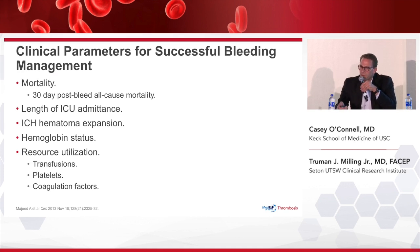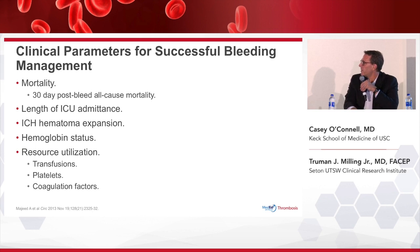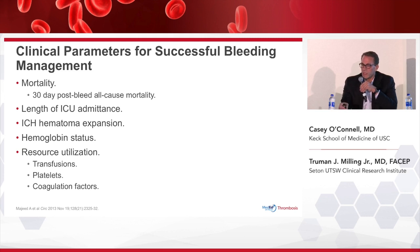What are the parameters we look for in bleeding studies? We would like patients not to die — that would be a victory. We don't want them in the ICU a long time. When studying ICH patients, a good surrogate outcome for mortality is hematoma expansion, which correlates well with 30-day mortality — if the hematoma is getting bigger in the first 24 hours, that portends bad things. Hemoglobin status for non-visible bleeds. And resource utilization — we would like to not keep giving red blood cells if our reversal agent is working.